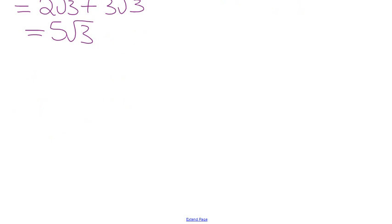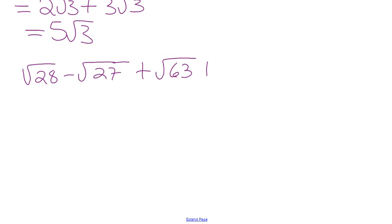Let's try a practice: root 28 minus root 27 plus root 63. At first glance there are no like radicals — nothing to collect together. We need to change these. If you want to show root 28 as 4 times 7, which is root 4 root 7. You can go directly to mixed radical form. I'm going to go straight from entire radical to mixed radical without intermediate steps, but you can do steps if you want.